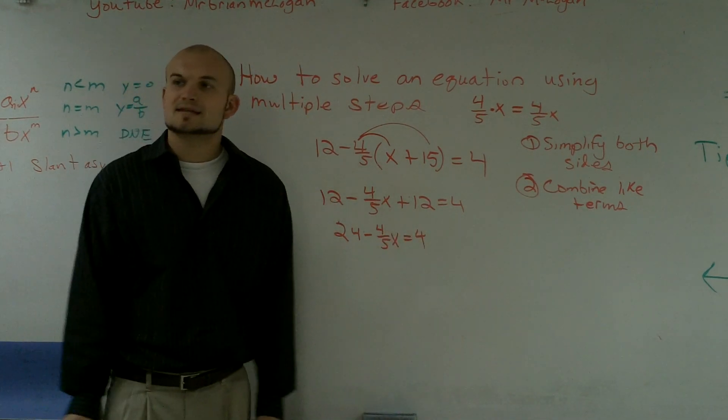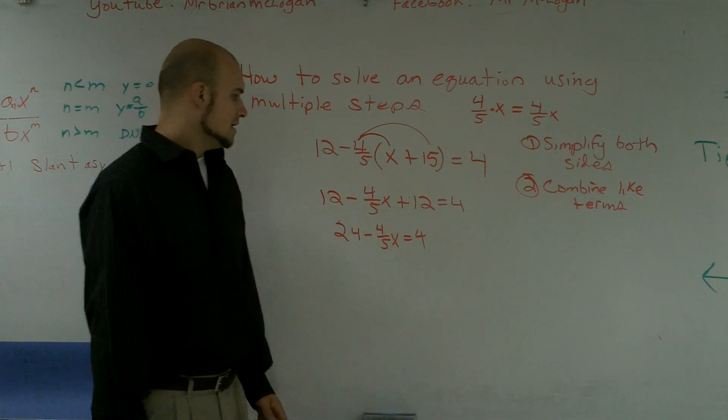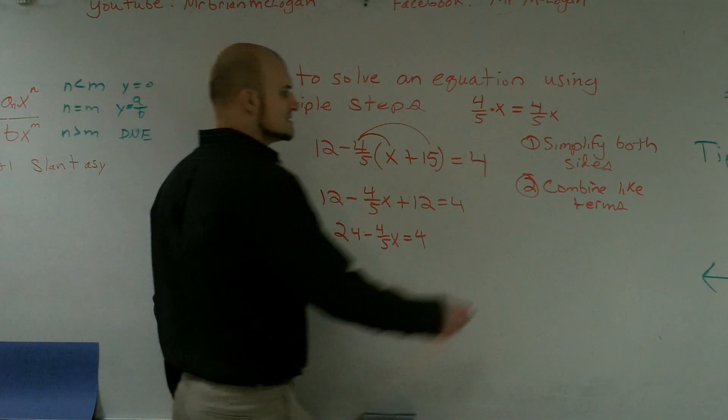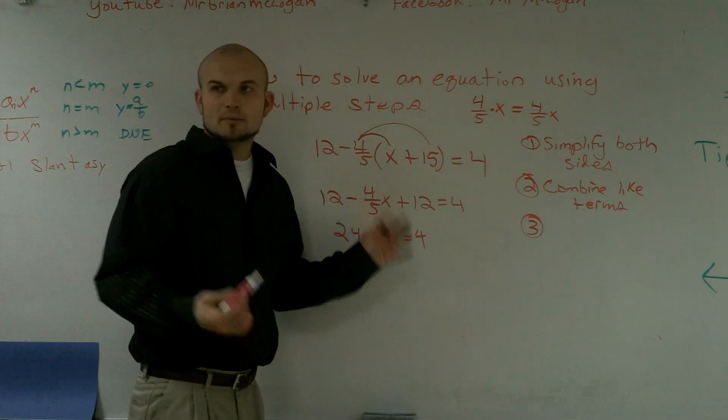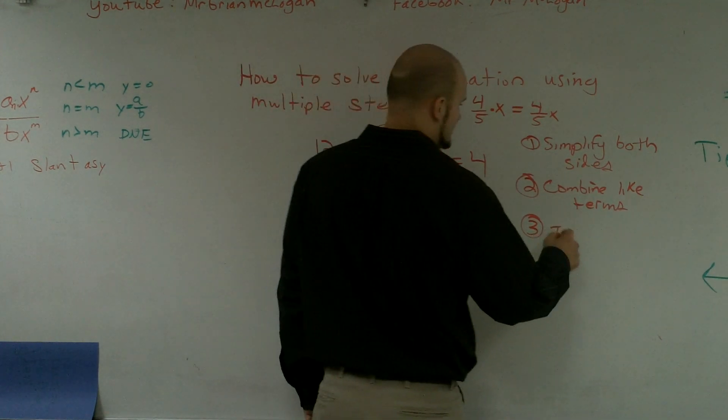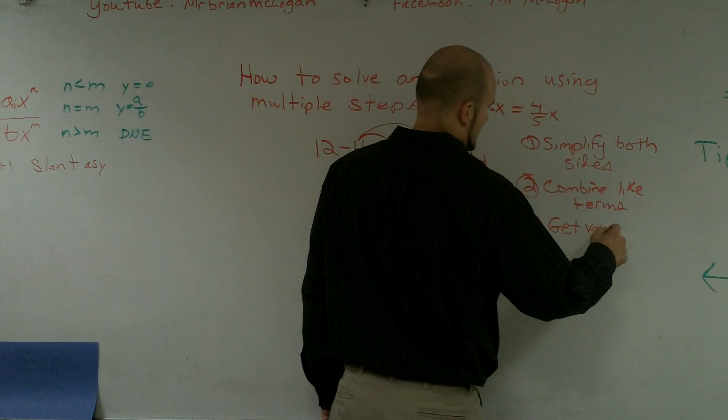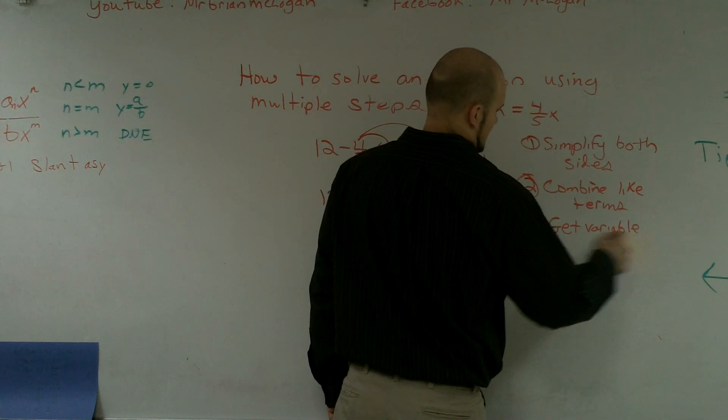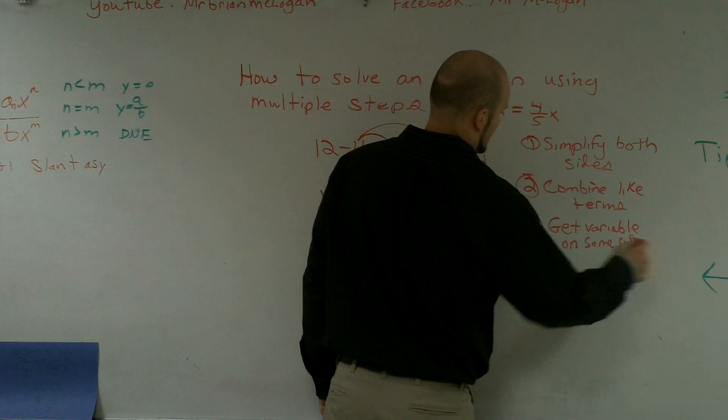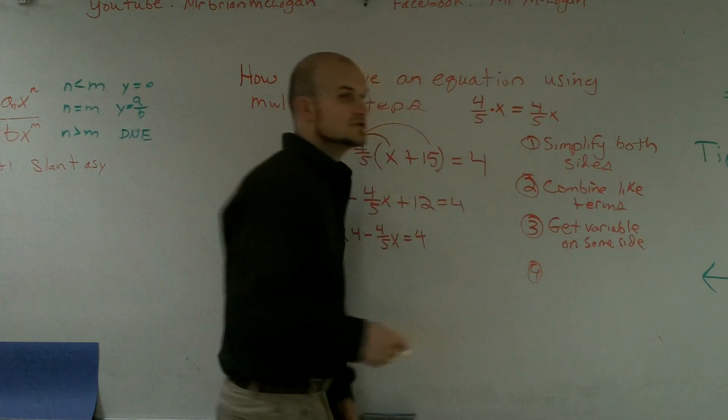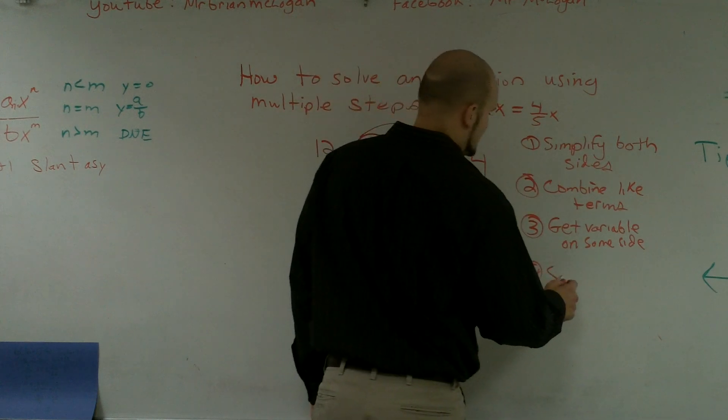So now what we have guys is a two-step equation. Now usually the next term is to go ahead and get a variable on both sides, but we only have the variable on one side so we're okay. But I'm still going to write the step. And then step four, which we should be well versed in, is solve the two-step equation.